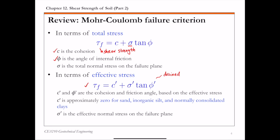Sigma prime is the effective normal stress on the failure plane. From the Mohr-Coulomb failure criterion, the strength parameters needed are c and phi if using total stress measures, or c prime and phi prime for effective stress. We're going to talk about using the direct shear test to determine these shear strength parameters.